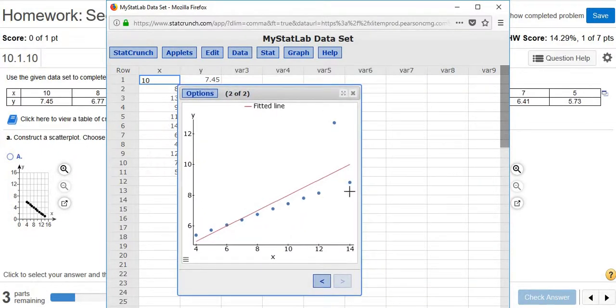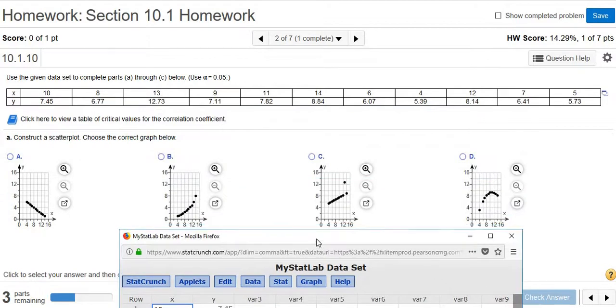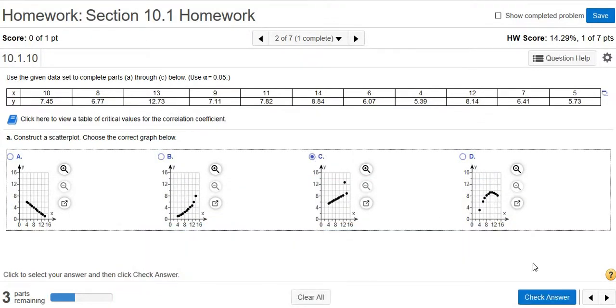So we want the one that looks like this. This is called an outlier, this number here that's far away from the other points. So let's see if we can find the one that has the outlier. Yep, it's C. So the answer is C.